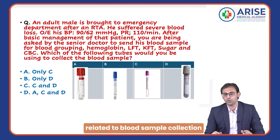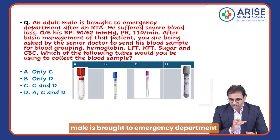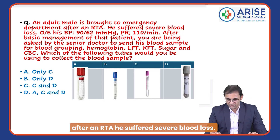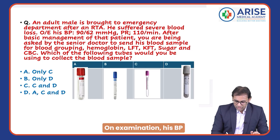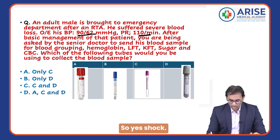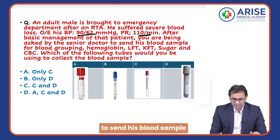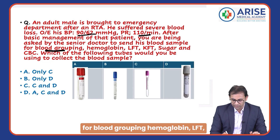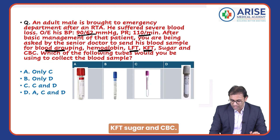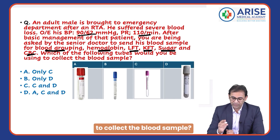This question is related to blood sample collection for an emergency case. An adult male is brought to the emergency department after an RTA; he suffered severe blood loss. On examination, his BP is 90/60 and pulse rate is very high — he is going into shock. After basic management, the senior doctor asks you to send his blood sample for blood grouping, hemoglobin, LFT, KFT, sugar, and CBC. Which tubes would you use to collect the blood sample?